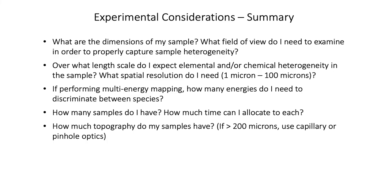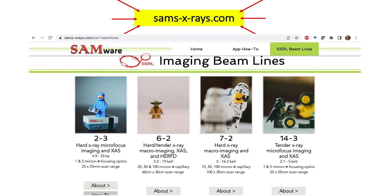In summary, key experimental considerations before coming to the beamline include: the dimensions of your sample; what field of view you need to capture sample heterogeneity; the length scale of elemental or chemical heterogeneity — i.e., what spatial resolution you need (1 micron vs. 100 microns); if performing multi-energy mapping, how many energies are needed to discriminate between species; how many samples you have and how much time to allocate to each; and finally, how much topography your samples have. If samples have greater than 200 microns of topography, you should consider capillary or pinhole optics at beamlines 7-2 and 6-2. All of this information is summarized on our beamline webpage at ssrl.slac.stanford.edu.